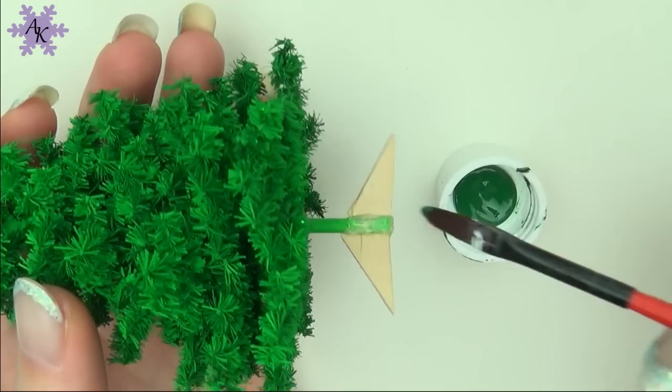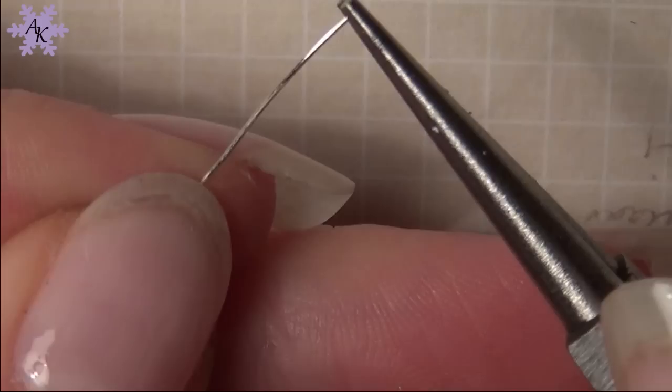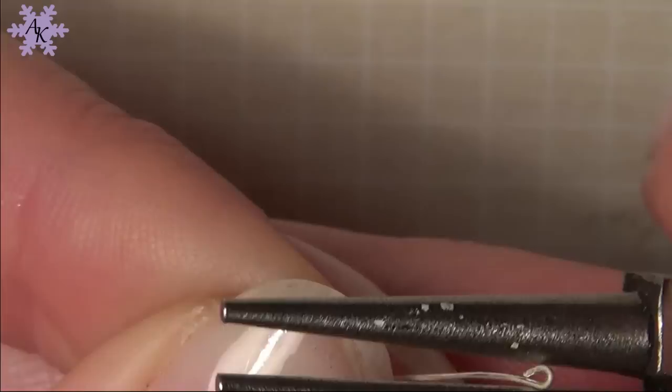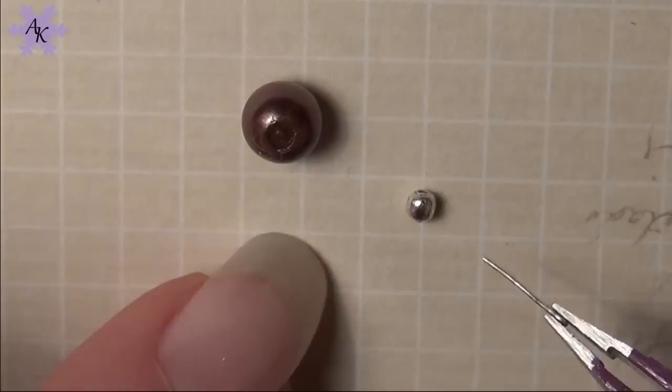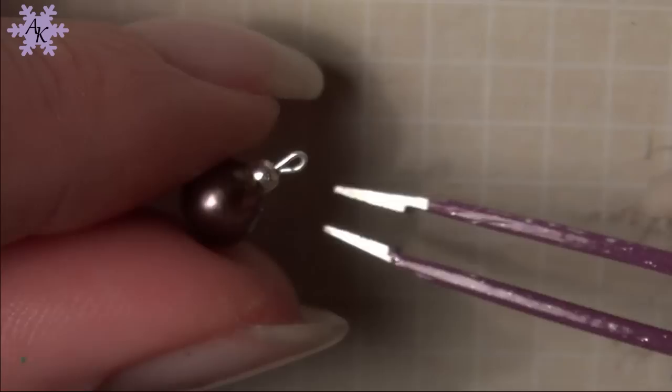Now paint the stand. Moving on to the ornaments. Take a small piece of wire and make a tiny loop. Then I use a pearl and a small silver plated bead. Stick the end of the wire through the small bead and glue it onto the pearl.